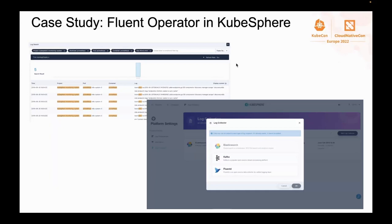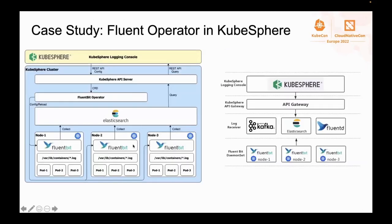Let's take a look at a real case study from our team. KubeSphere is an open-source container platform built on Kubernetes. KubeSphere has a built-in logging console that allows users to search logs and configure log collectors such as Kafka, FluentD, or Elasticsearch. KubeSphere adopts Elasticsearch as the back-end logging service with FluentBit as the log collector, running a FluentBit DaemonSet on each node to collect container and application logs. Different tenants can search logs in a unified logging console, with logs visible only to specific tenants or namespaces.